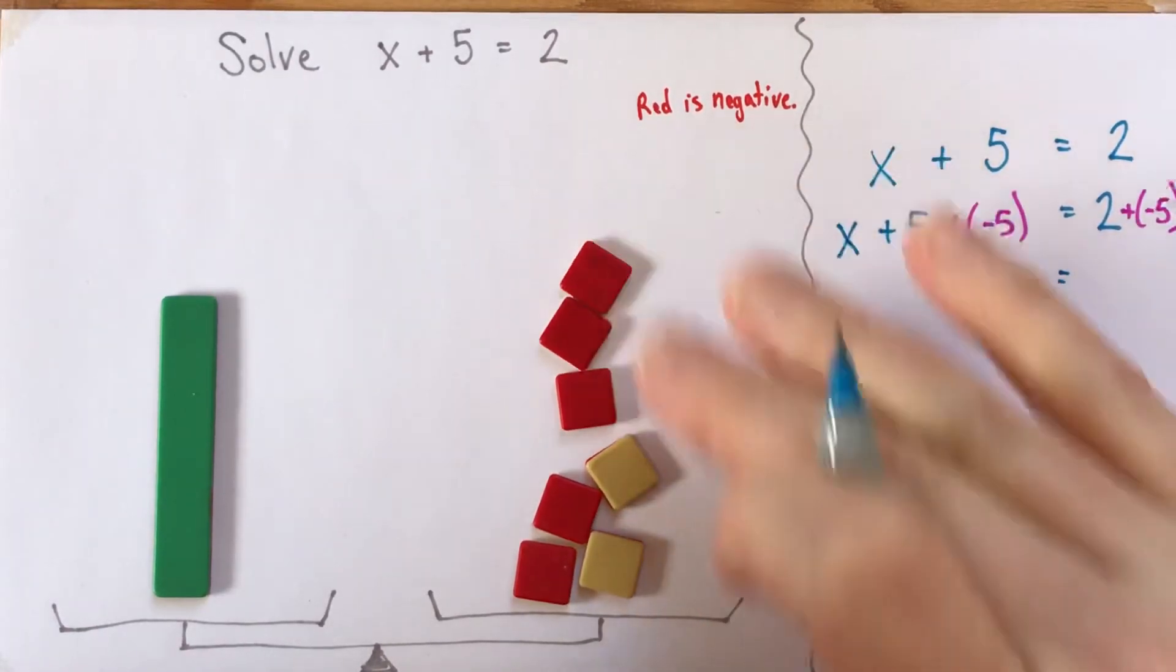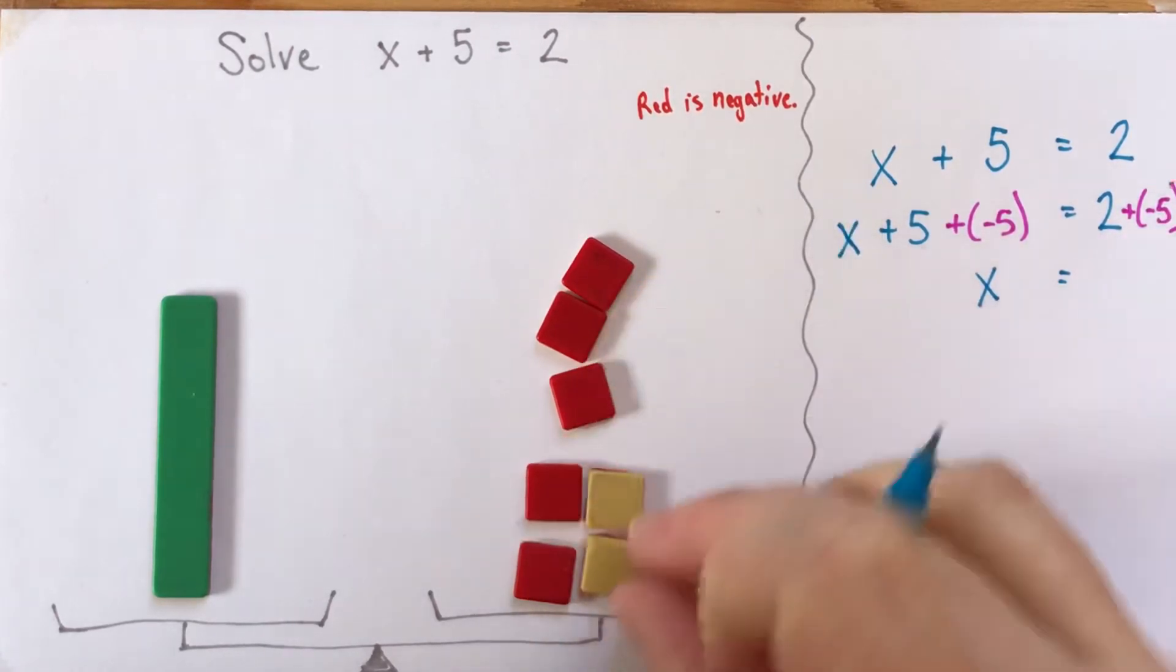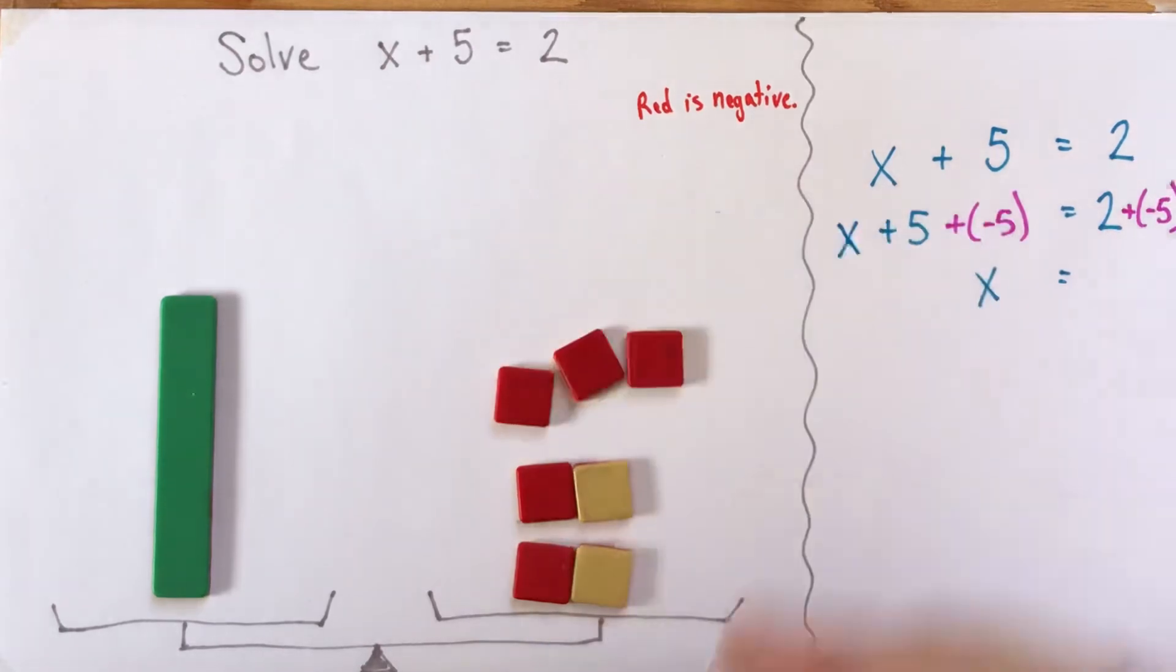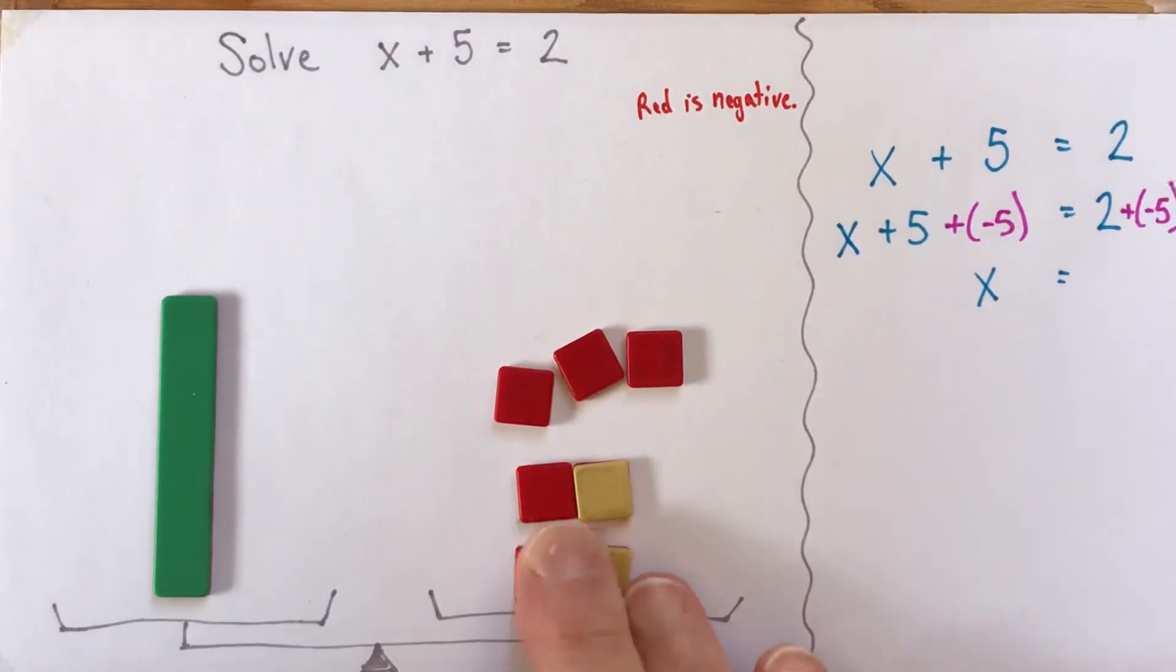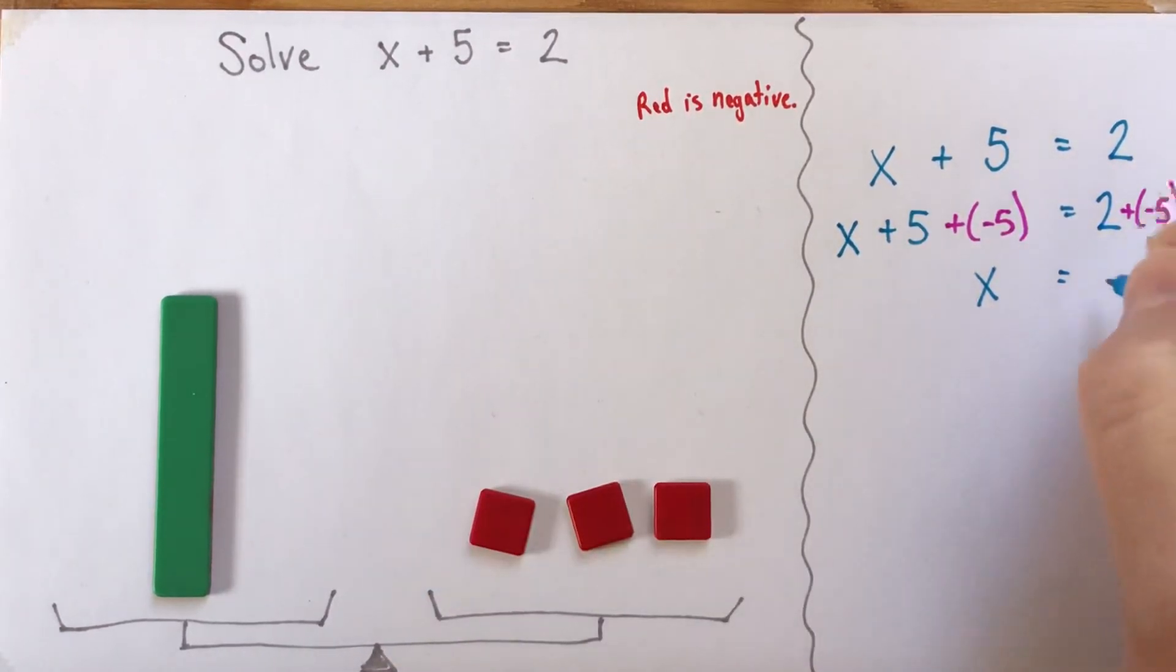So on the left side of the equation, I'm just going to write down algebra for what we just did. x plus 5 plus negative 5, that gave us just x. And then over here, we have to think a little bit about what this is equal to. And if I think of my zero pairs here, I've got two zero pairs. So I can get rid of each of them without changing the value of anything. And what does that leave me? That leaves me negative 3. So there's my solution.